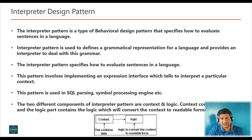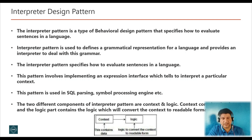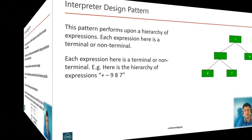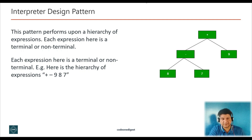The interpreter pattern defines a representation of a grammar of a given language along with an interpreter that uses this representation to interpret sentences in the language. Grammars are mapped to classes to arrive at a solution — for instance, 7 minus 2 can be mapped to a class 'minus'. The two different components of interpreter patterns are context and logic. Context contains the data, and logic contains the logic which converts the context to a readable format. This pattern performs operations upon a hierarchy of expressions, each of which is either a terminal or a non-terminal component.